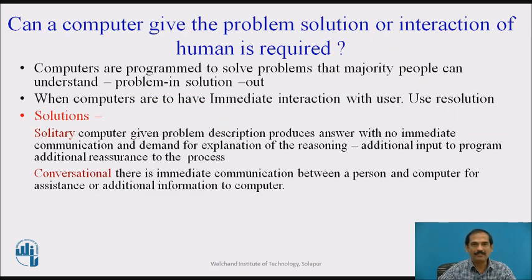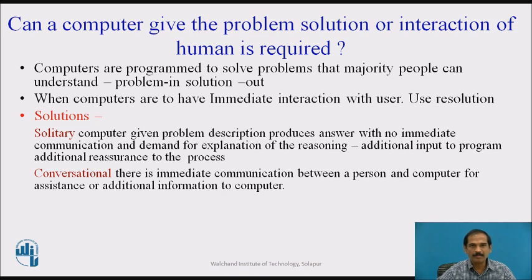The next key aspect is: can a computer give a problem solution, or is human interaction required? Some problems have the input in and the solution out. When computers need immediate interaction with the user where information from the user is required, resolution is used as a solution aspect. Solutions may be of two types: solitary, where the computer receives the problem description and produces an answer with no immediate communication — the human is not involved; and conversational, where there is intermediate conversation between the person and the computer to assist by providing additional information.